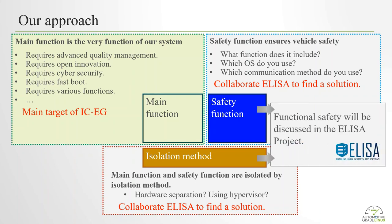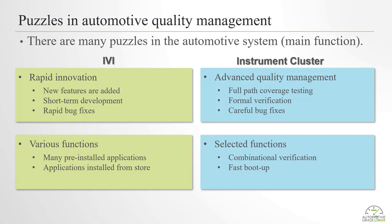Functional safety will be discussed in the ELISA project. This slide shows a puzzle in automotive quality management on the main function side. There are many puzzles in automotive systems. On one side, it requires rapid innovation: new features are added, short-term development, and rapid bug fixes. On the other hand, the instrument cluster requires advanced quality management: full-path coverage testing, formal verifications, and careful bug fixes. This is a big puzzle.